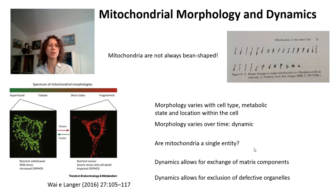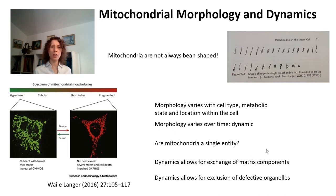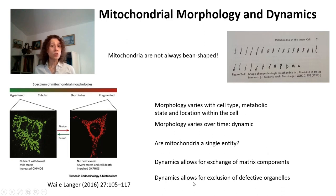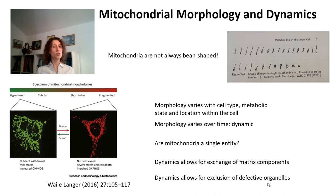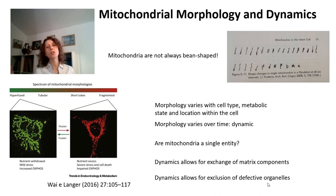This is really important because dynamics allows for the exchange of matrix components, for the exchange of membrane components, and for a healthier mitochondrial population because of this exchange. It also allows for the exchange of mitochondrial DNA between single mitochondria. This allows for the exclusion of defective organelles - if you exchange components, you maintain mitochondria in a more healthy state, but if defective organelles don't fuse into the network, you're going to eliminate components such as mitochondrial DNA that lead to the formation of defective mitochondria. So mitochondrial dynamics is really important.